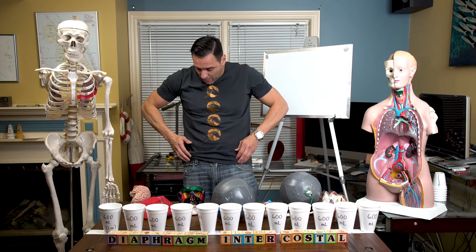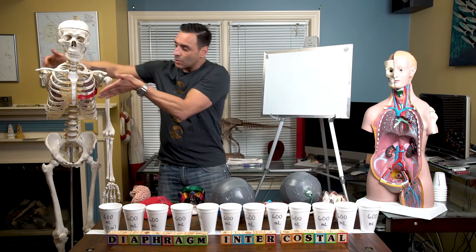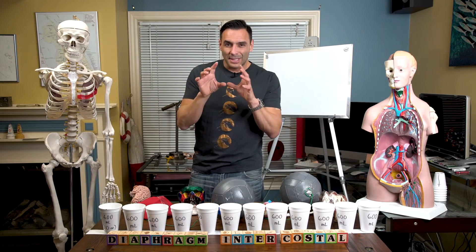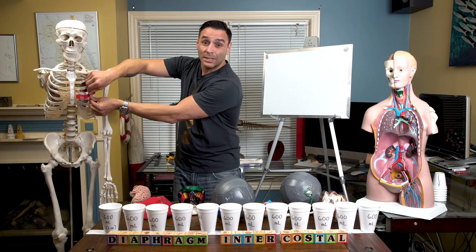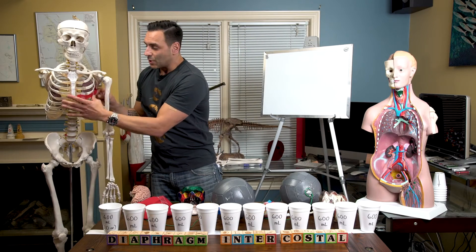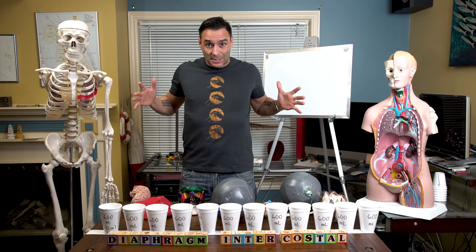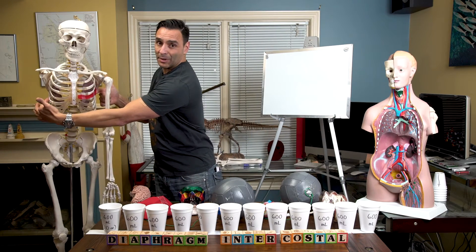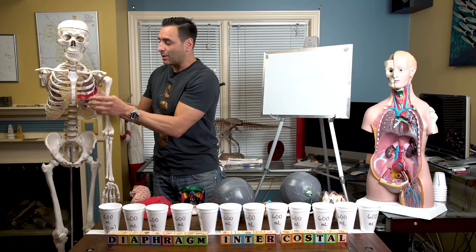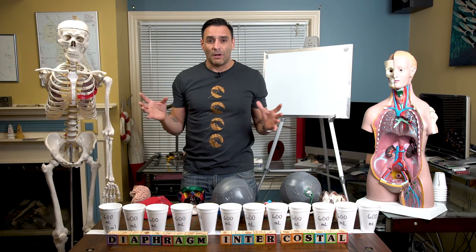It's more complicated than this — there are external intercostals and internal intercostals. The external intercostal muscles are aligned in a shape where if you put your hands in your pockets, that's the way the muscle fibers are oriented. When they contract, they actually expand the rib cage outwards and sideways, so the diameter of the chest from side to side increases, and the diameter from front to back increases as well.